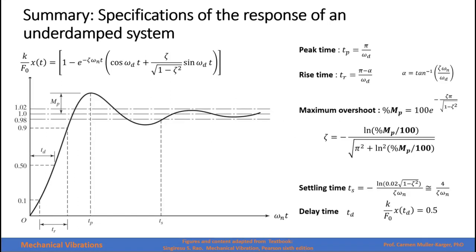This slide provides a summary of the most important parameters for an underdamped system subjected to a step function. The response is shown graphically. The peak time is the time to the first peak. The rise time is the time to reach 90% of the response. The maximum overshoot is the difference between the peak value and the steady state response. The settling time is when the response reaches and stays within 98% of the steady state value, and the delay time is when the response first reaches 50% of the steady state value.